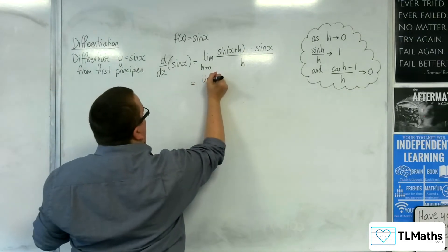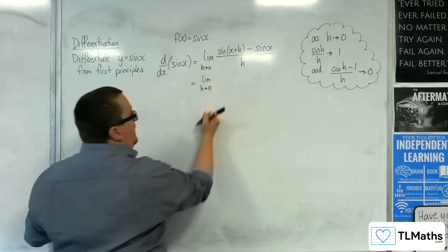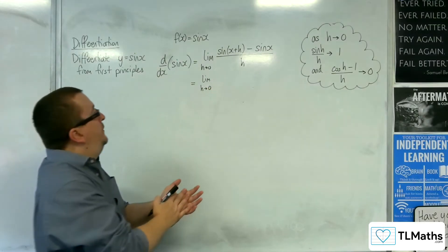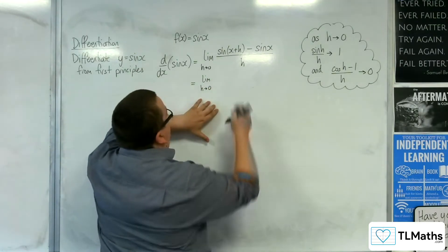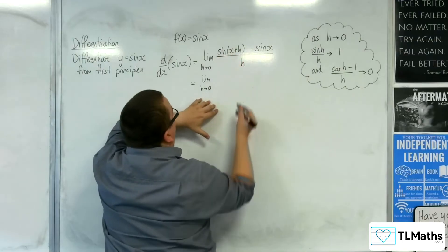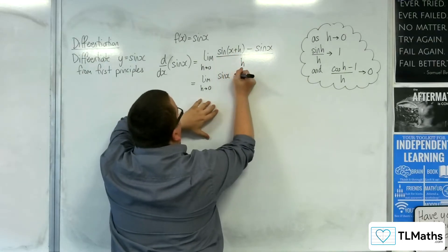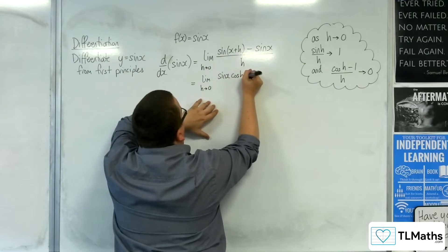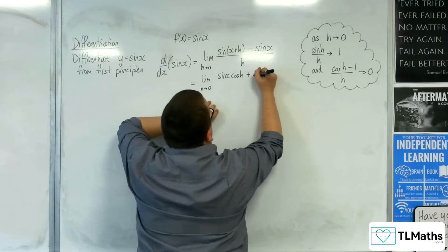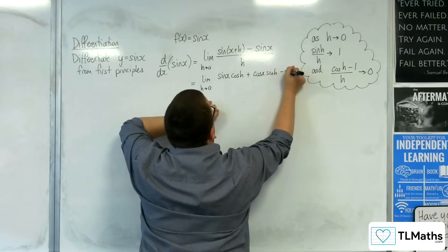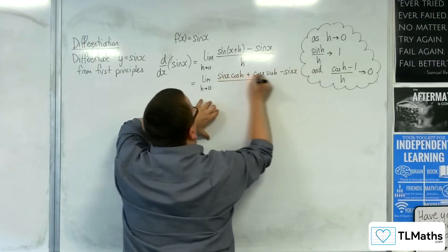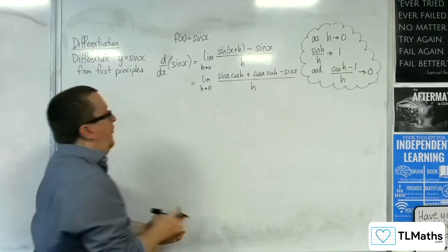This whole bit here will be identical to how we did it with small angle approximations. So the limit as h tends to 0, split this up using the compound angle formula: sine x cosine h plus cosine x sine h, take away sine x, all over h.